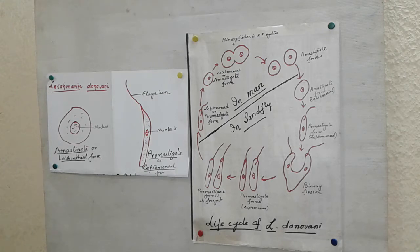It is a digenetic parasite that completes its life cycle in two hosts. First one is the primary or definitive host which is man and in some cases dogs and other cattle. Second is secondary host or vector or carrier which is sand fly, Phlebotomas. It transmits the parasite from man to man.